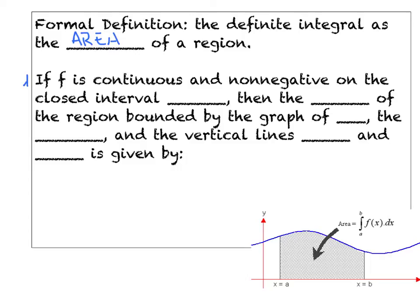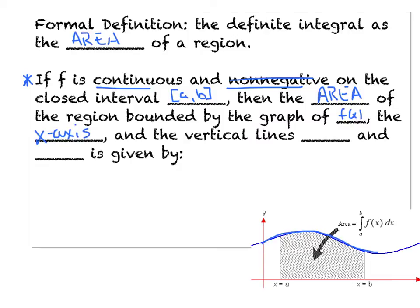Our formal definition says: if f is continuous and non-negative — we'll deal with the negative case later — on the closed interval from a to b, then the area of the region bounded by the graph of f(x), which in our picture is this nice blue curve, the x-axis — that's always implied, the x-axis is always going to be one of our boundaries — and the vertical lines x equals a and x equals b, then the area is given by the integral from a to b with those bounds and our function with respect to x.